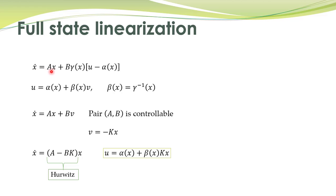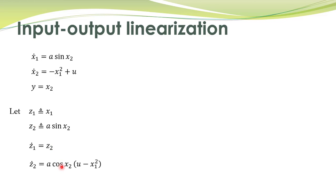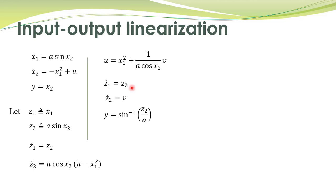To discuss full state linearization: if the system is given by these state equations, we define a control law to obtain a linear state space representation. This kind of linearization — where all the state equations become linear — is called full state linearization.